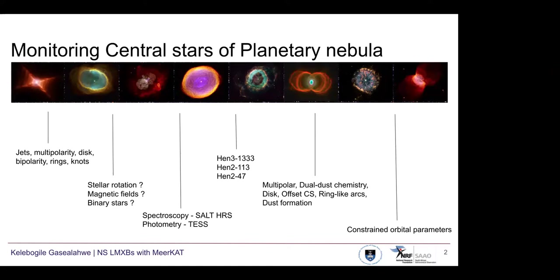Over the past decades, it's been argued what the mechanisms responsible for these features are — those are stellar rotation, magnetic fields, and binaries. The first two mechanisms mostly fail as seen observationally because the field strengths do not last long enough, so they won't be able to maintain or sustain these morphologies. But with observational evidence and discoveries over the past decade, binaries have been the most favored scenario.